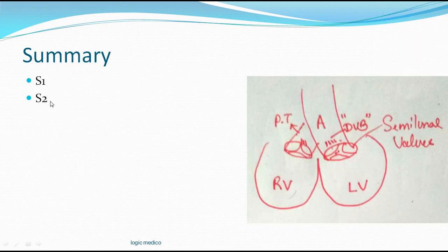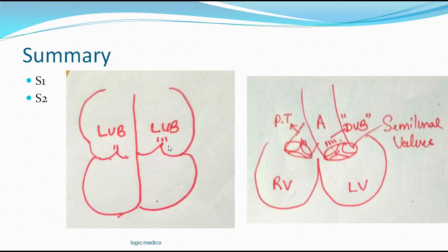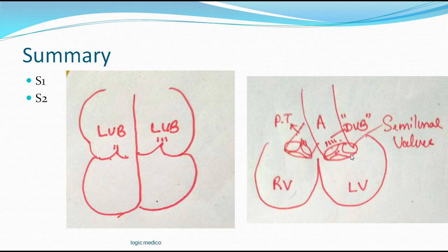In summary, we concentrate on S1 and S2, which are heard in every individual. S1 is due to closure of atrioventricular valves - the closure produces a sound called 'lub'. S2 is due to closure of semilunar valves - the closure produces a sound called 'dub'. S1: lub, S2: dub - that's how they alternate.